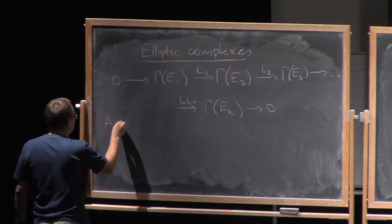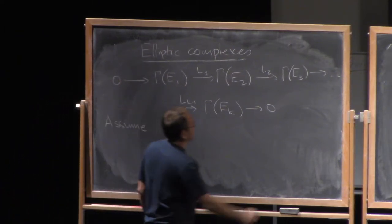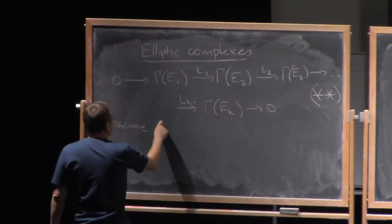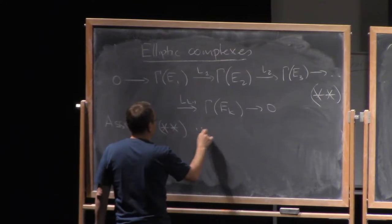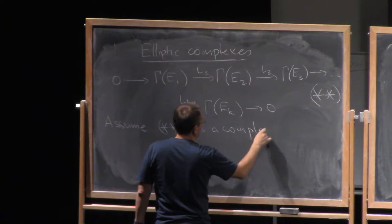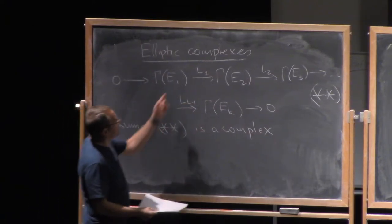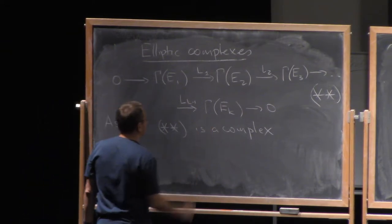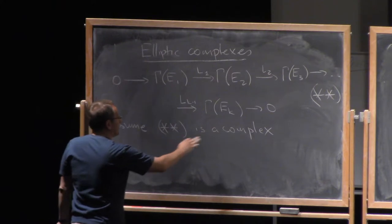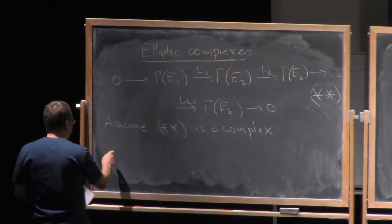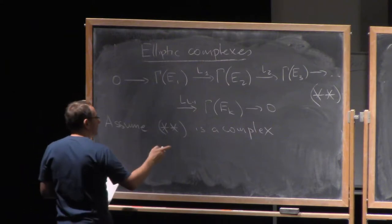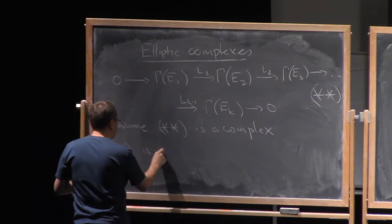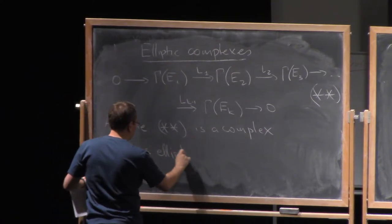So, assume this is a complex in the usual sense that is when we take L1, then L2, we have 0. Well, for any sequence of two maps. So assume that this is a complex, then this is called elliptic. Two stars is elliptic.